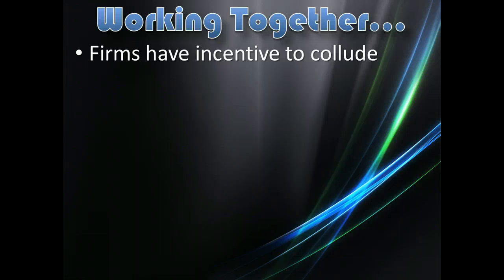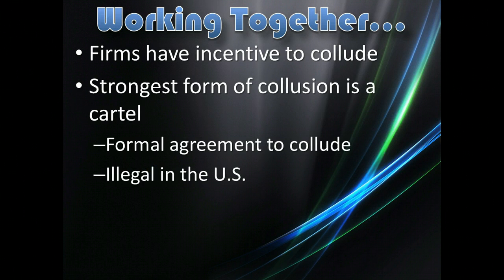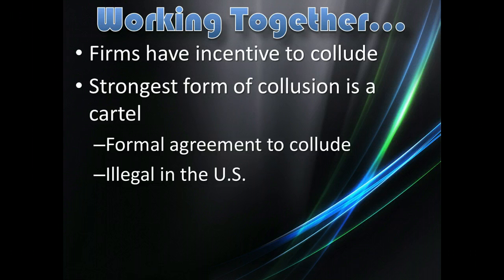Firms have an incentive to collude because it can help maximize their profits, but they also have an incentive to cheat. The strongest form of collusion is what we call a cartel — a formal agreement between companies, or in the case of OPEC, between countries, on how much each member is responsible for producing. Cartels are illegal in the United States. Executives from major companies in the same industry are very careful about what they say, because talking about how to work together to maximize profits runs afoul of the law. A formal agreement is not legal, and neither is an informal agreement. Companies are expected to operate separately, but there are still informal ways firms can work together.